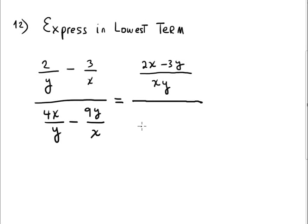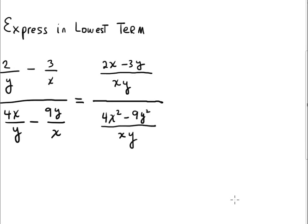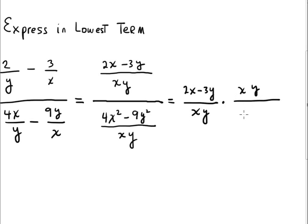Leave the numerator for a moment. Now in the bottom part, the LCD again is xy. xy divided by y is x, times 4x is 4x squared. xy divided by x is y, times negative 9y is negative 9y squared. After that, copy the expression in the top exactly the same — 2x minus 3y over xy — times, and you flip the fraction in the denominator part: 4x squared minus 9y squared.